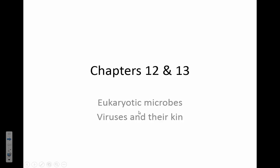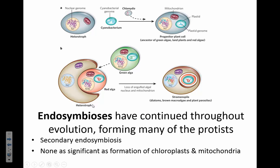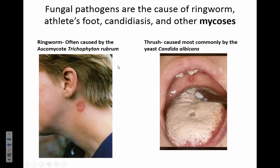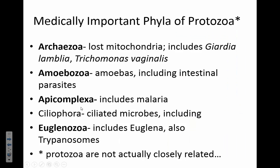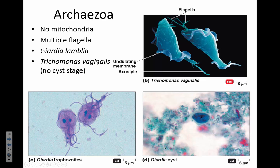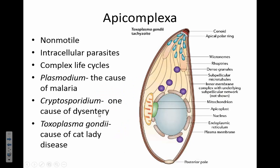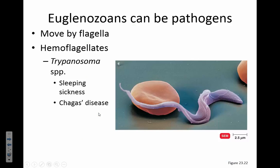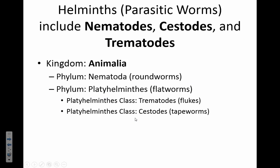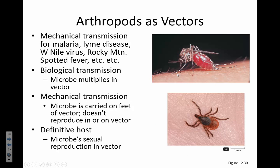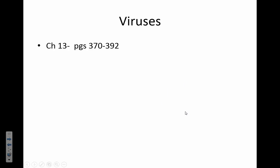Eukaryotic microbes. We talked about endosymbioses, we talked about fungi. Athlete's foot is a fungus that makes you sick. Thrush and ringworm are also fungi that make you sick. Plants you don't need to know anything about. There are lots of different protozoa: trichomonas vaginalis, giardia, amoebas that cause diarrhea, malaria, African sleeping sickness, Chagas disease. You've got your worms—helminths—nematodes, tapeworms, and arthropod vectors. That was chapter 12.